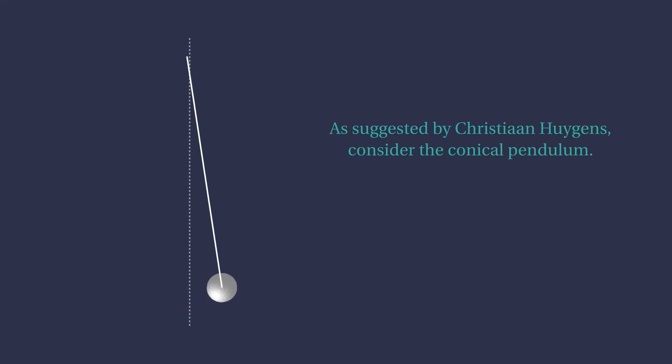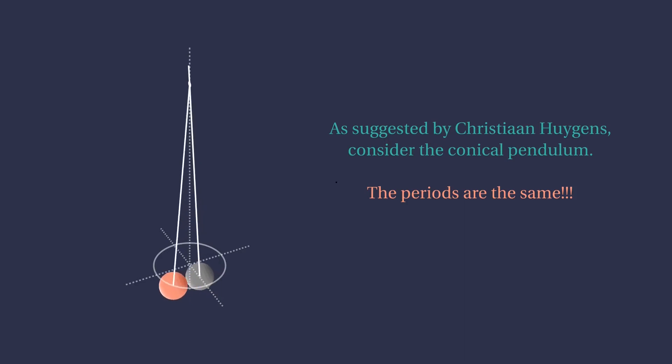Consider the motion of a pendulum moving on a horizontal circle, that is, a conical pendulum. Projecting its two-dimensional motion onto a vertical screen, we can clearly see that the period of both pendulums is the same, at least when the size of the oscillations is small.